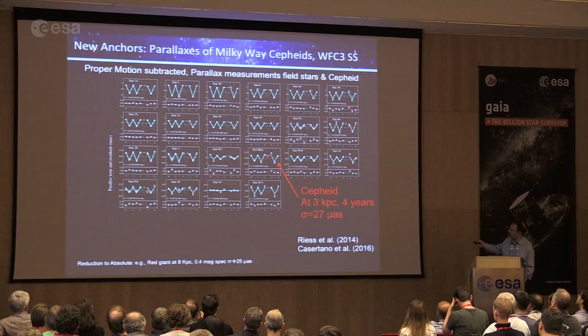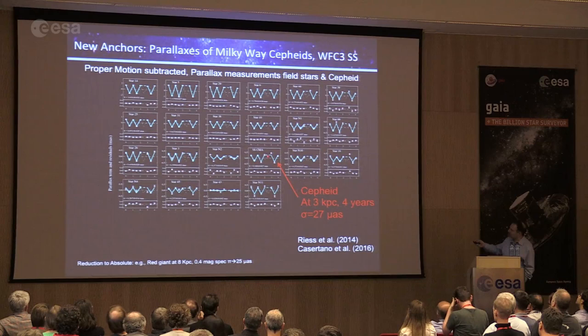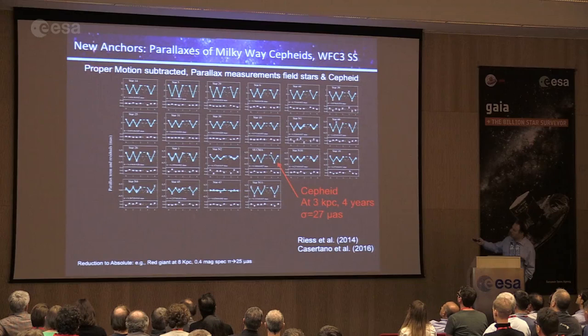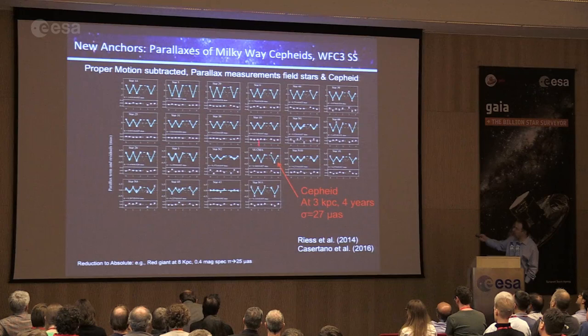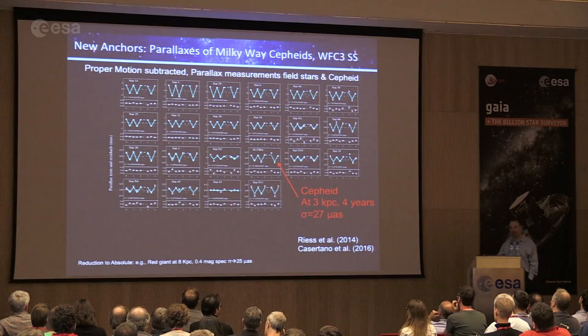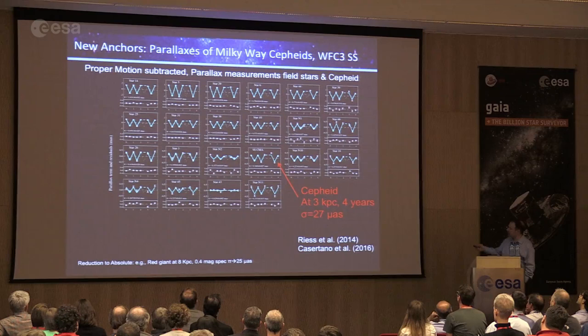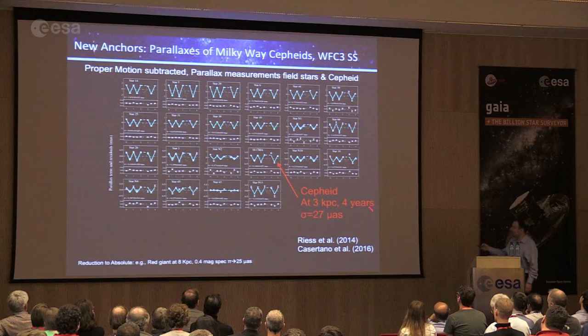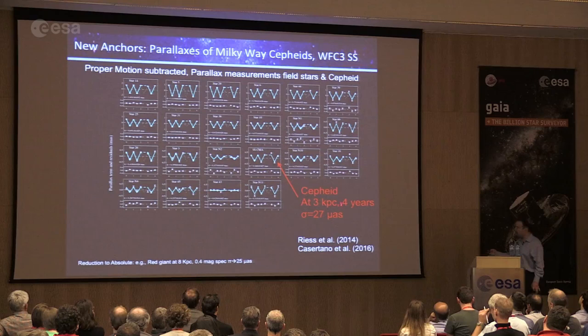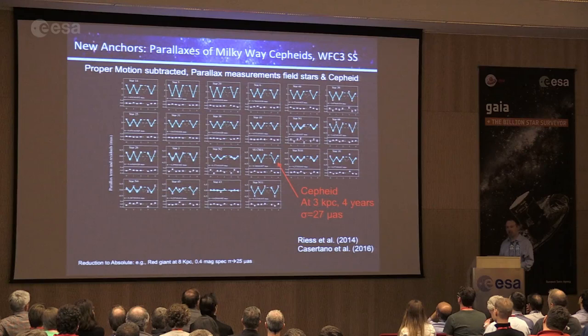After removing proper motion, what remains is the wobble back and forth — the parallax amplitude. The inverse of that is the distance. Here is one Cepheid variable at a distance of 3 kiloparsecs. In an ideal situation this is probably our best example — we can get down to something like 30 to 40 micro-arcseconds, maybe a little better.